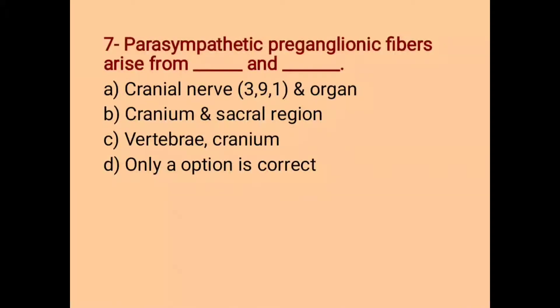Next is Parasympathetic pre-ganglionic fibers arise from dash and dash. Cranial nerve 391 and organs, Cranium and sacral region, Vertebri or Cranium C, Only A option is correct. And the correct option is Cranium and Sacral region.